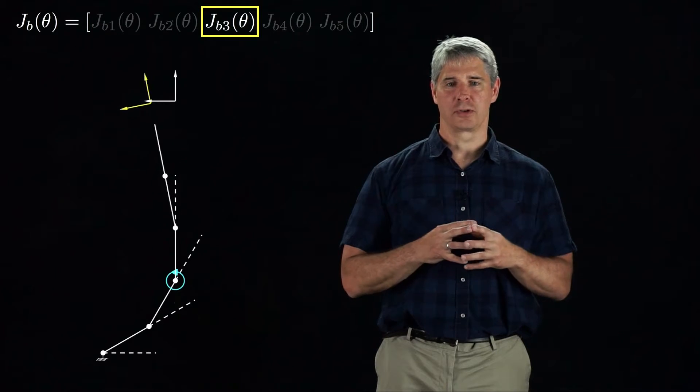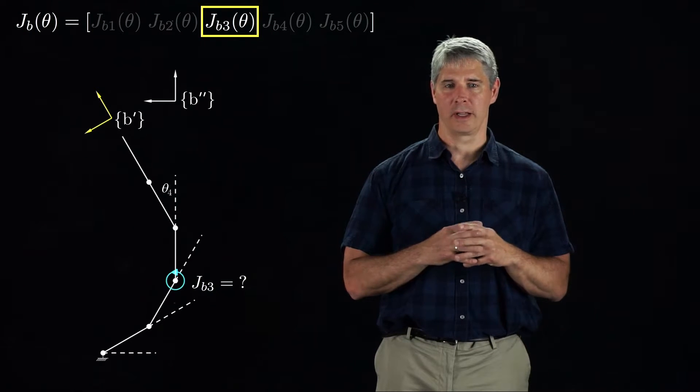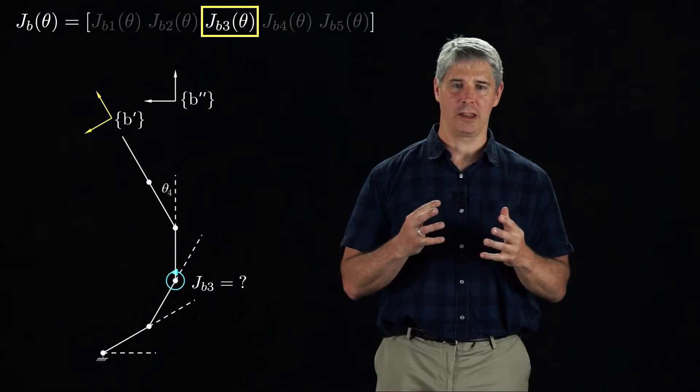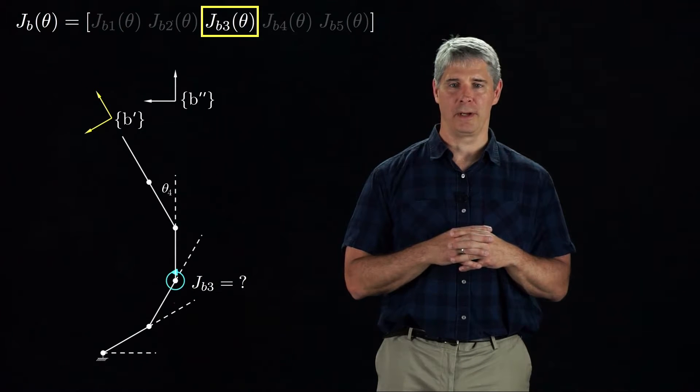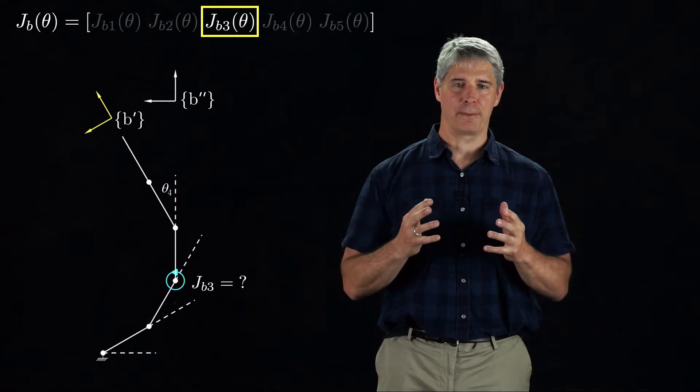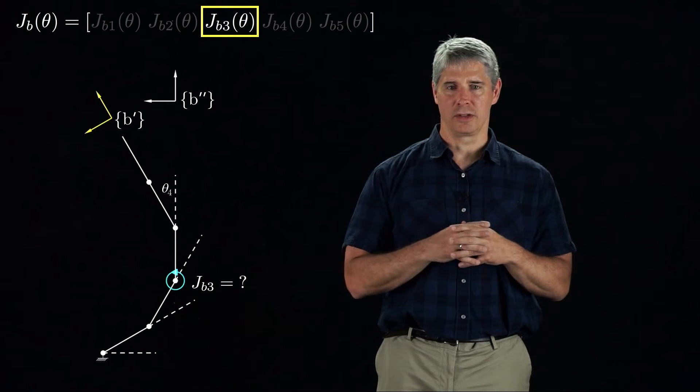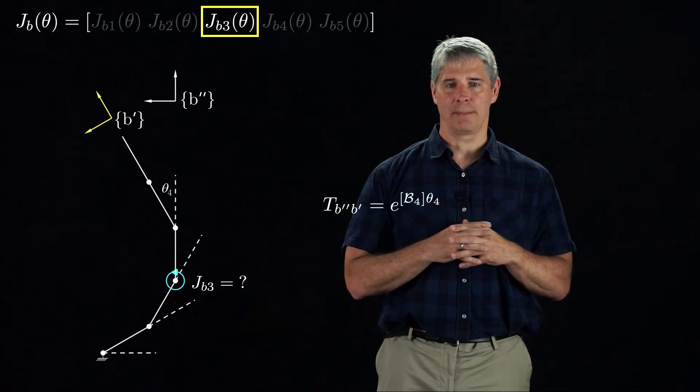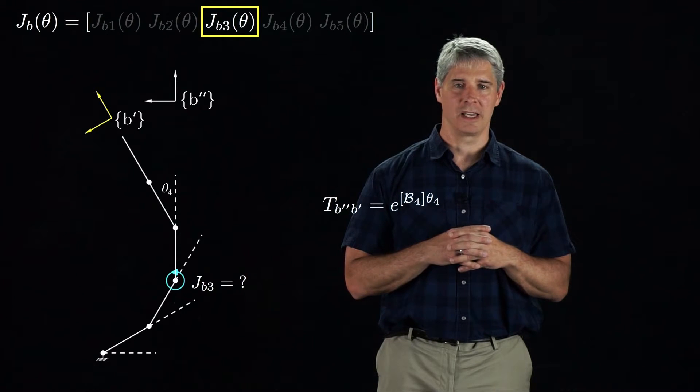Now we rotate joint 4 by theta 4. This motion changes the configuration of joint 3 relative to the B frame, so Jb3 changes. We define the frame B' to be the B frame before joint 4 is rotated and the frame B'' to be the B frame after joint 4 is rotated. The relationship between the two is given by Tb'B'' equals e to the bracket B4 times theta 4.